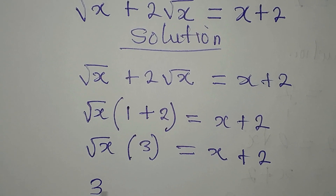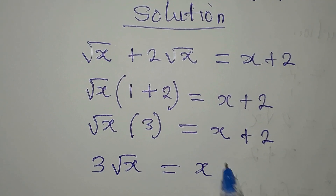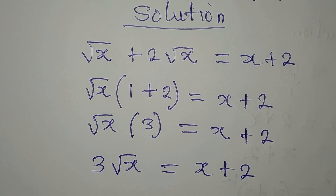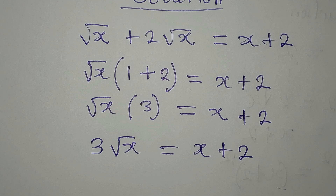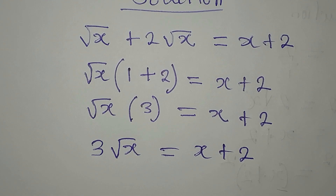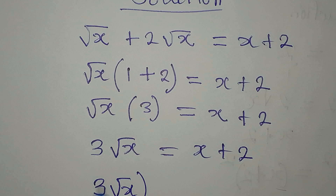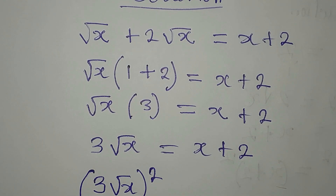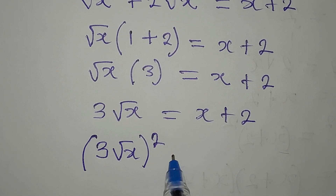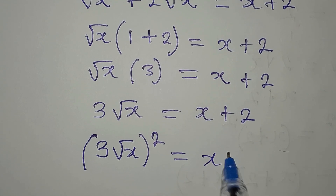So we get 3 root x equals x plus 2. Our next target is to remove the roots, and the only way we can do that is by squaring both sides.